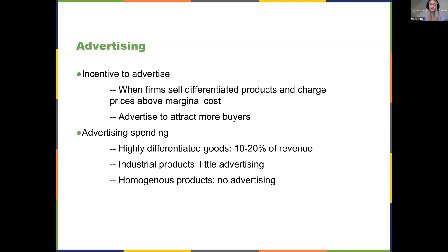Just some quick facts about advertising, particularly in the United States: in highly differentiated goods, 10 to 20% of a firm's revenue is usually spent on advertising. Whether this be commercials, promotions, or coupons in the mail — that's almost a fifth of the revenue that these firms in monopolistically competitive markets bring in, and they're spending it right back out on advertising to attract more customers and tell customers about the slight differences in their product compared to similar firms.